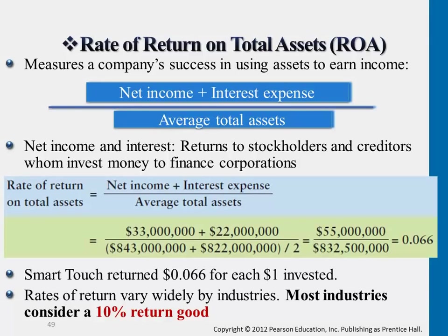Remember, net income comes from the income statement — revenues minus all different types of expenses. It is the internally generated income based on providing services or goods. So we measure the relationship between the average return to shareholders and creditors compared to the average total assets the company holds. This tells us how the company has been using its assets to generate return to these two parties — that's what rate of return on total assets means.